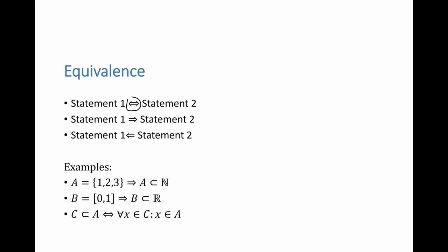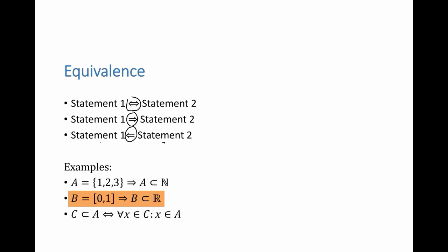Three arrows are used to indicate the relationship between two statements. The first means statement 1 and statement 2 are equivalent. The second means statement 1 implies statement 2. The third means statement 2 implies statement 1. For example: A = {1, 2, 3} implies A is a subset of N. B being the interval of real numbers between 0 and 1 implies B is a subset of R. C being a subset of A implies that for every element in C, that element is also in A — and vice versa, giving us the equivalence.